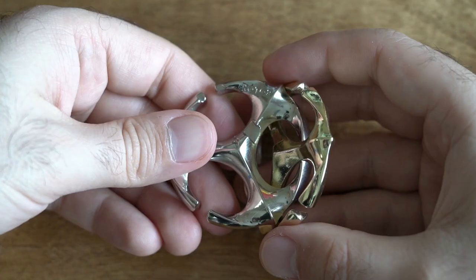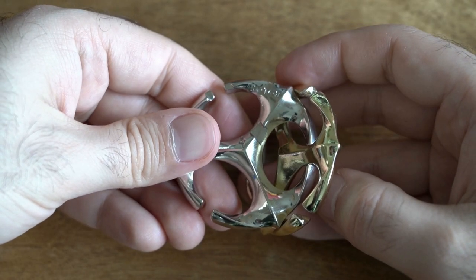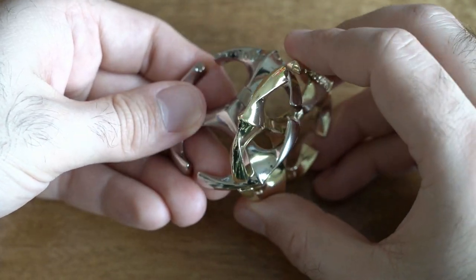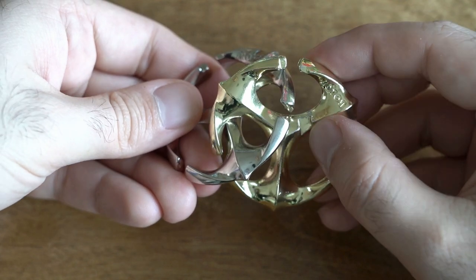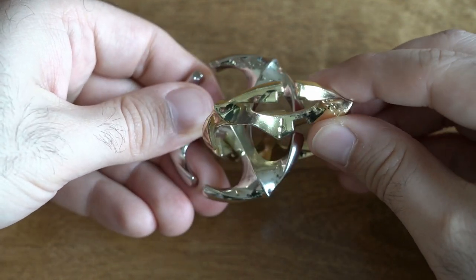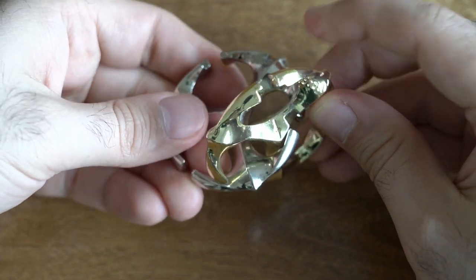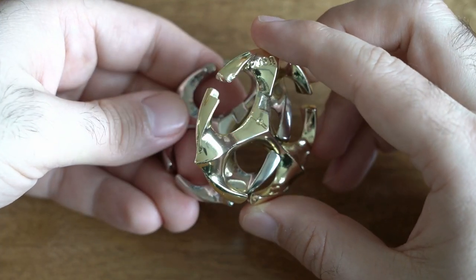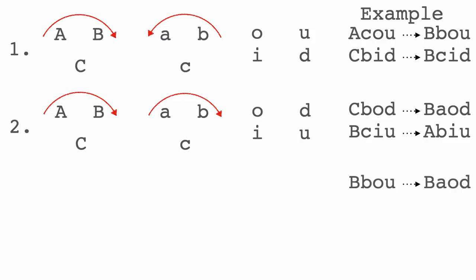The next type of move is going to use the groove on the yellow piece. We bring the grooved arm over here, go up, and then come back to this position. Now we identify the position — we went from B B O U to B A O D.